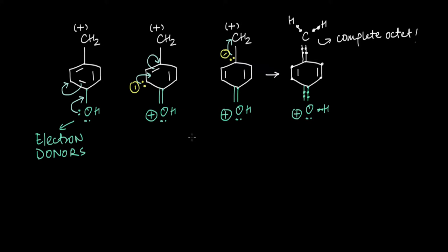One important point that might be a source of confusion: you might argue that if oxygen donates electrons, it becomes positively charged. Looking at the resonating form where all atoms have a complete octet, the oxygen does have a positive charge. You might think this is not a stable structure because having a positive charge on a highly electronegative element like oxygen is not energetically favorable. But remember that formal charges may not always represent the actual electron density present within the molecule.